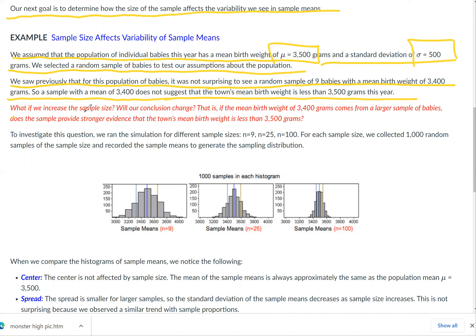But what if we increase the sample size? Will our conclusions change? That is, if a mean birth weight of 3,400 grams comes from a larger sample of babies, more than nine, does the sample provide stronger evidence that the town's mean birth weight is less than 3,500 grams?